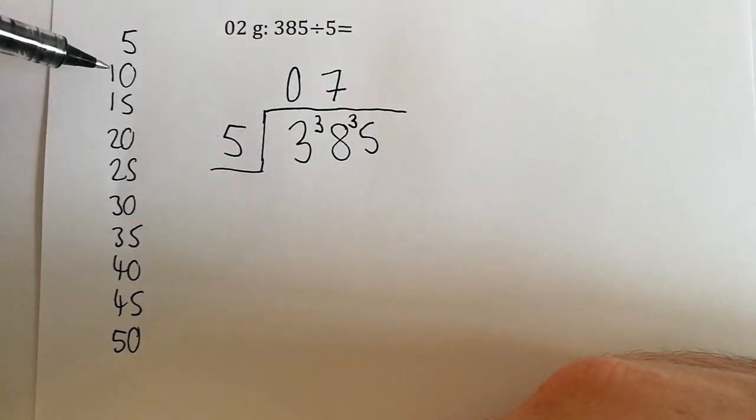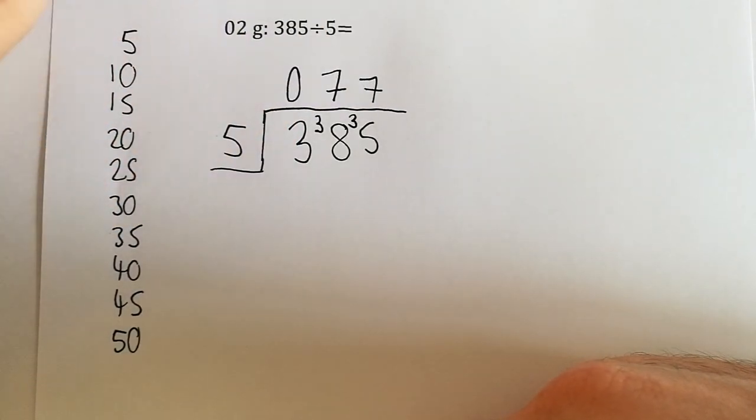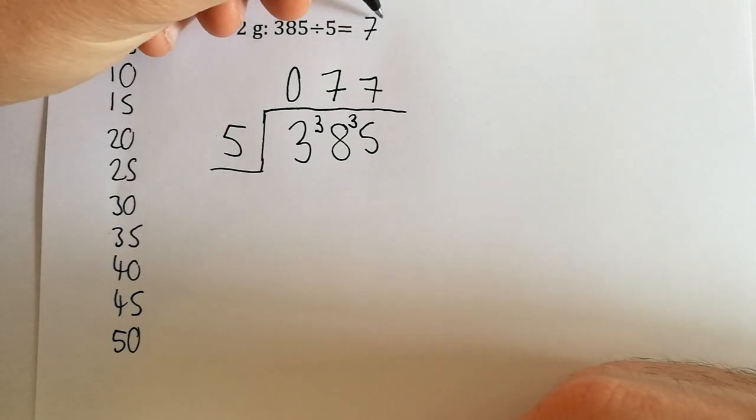And then 35, 1, 2, 3, 4, 5, 6, 7 is another 7. So 385 divided by 5 is 77.